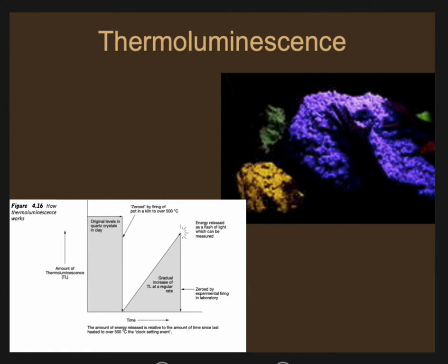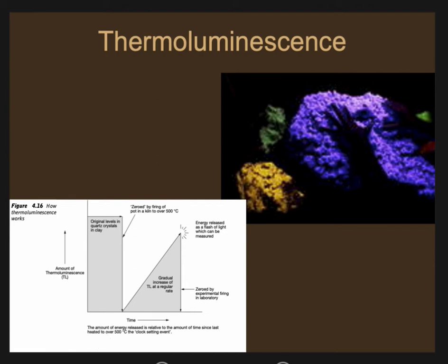Another technique is known as thermoluminescence, which deals with heat and light. In thermoluminescence, you are working with any fired clay that has been fired over 700 degrees centigrade. That piece of clay — it could be pottery or something else — is reheated under laboratory conditions. Once it's reheated, it actually gives off different wavelengths of light. The intensity and the different wavelengths can be measured, and that will give you an approximation of when that clay was last fired. So that's thermoluminescence.